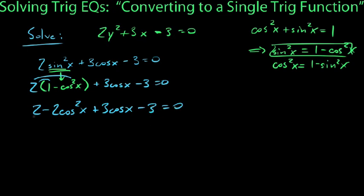We can combine like terms. The positive 2 and negative 3 combine, so we get -2cos²x + 3cosx, and the -3 and +2 become -1. So -2cos²x + 3cosx - 1 = 0.